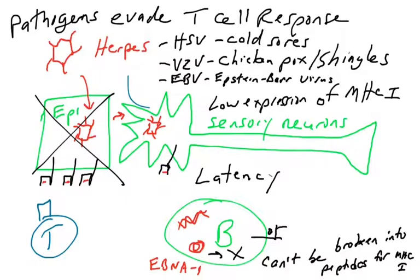That means CD8-positive T-cells will never recognize these as virally infected cells. The cells keep dividing, copying the virus's DNA, with EBNA-1 maintaining that viral DNA — so the virus stays with you forever and can be reactivated and then return to latency. These are three different herpes viruses — herpes simplex virus, varicella zoster virus, and Epstein-Barr virus — all part of the herpes virus family, and all capable of evading the immune response and remaining latent in an individual their entire life.